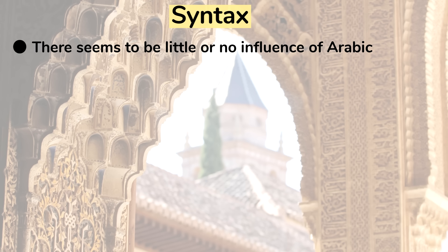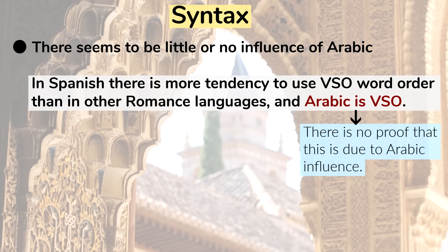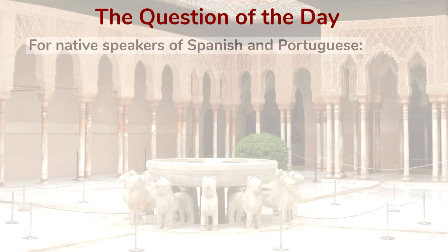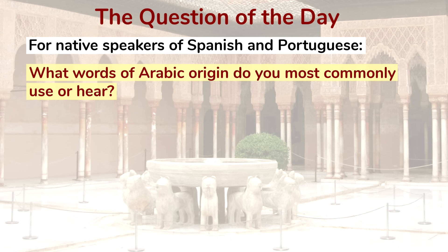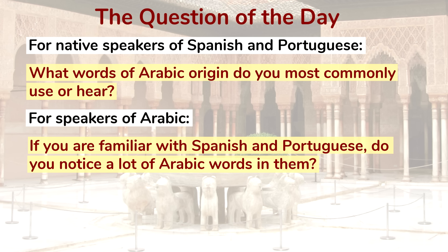In terms of syntax, there seems to be little or no influence of Arabic — at least none that's provable. There are some hunches: for example, in Spanish, VSO word order is used more often than it is in other Romance languages, and Arabic happens to be VSO, but there's no proof that this is due to Arabic influence. It's clear that virtually all of Arabic's influence lies in the area of vocabulary, and over the centuries a lot of that vocabulary has become obsolete. As different languages like French and English have come into vogue, different types of loanwords have come to influence both languages more. But still, words of Arabic origin are an important part of both Spanish and Portuguese and are used on a daily basis.